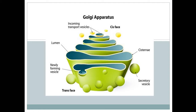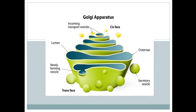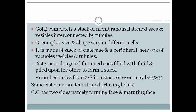The parts found in the Golgi apparatus include incoming transport vesicles, the lumen of the Golgi complex, newly forming vesicles, the two faces — the cis face and trans face — and secretory vesicles. We will discuss all these components today.